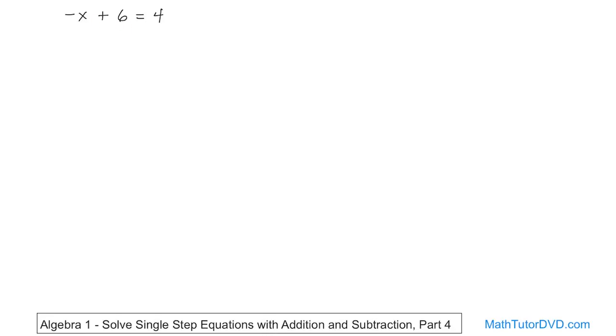So since it's addition, we need to do the opposite, which is subtraction. So we're going to subtract 6 from both sides. So we have the plus 6, we'll subtract 6 from the left, and then when we do that, we have to subtract 6 from the right.